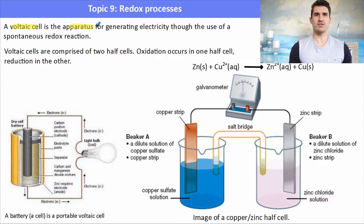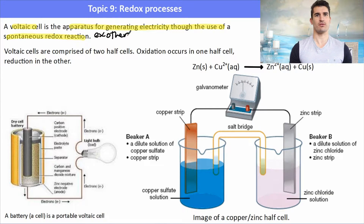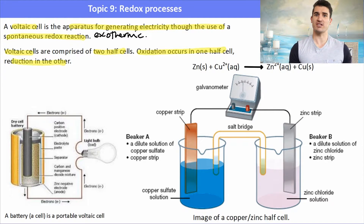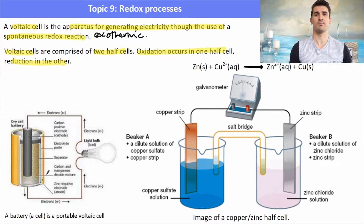A voltaic cell is an apparatus for generating electricity through a spontaneous redox reaction. It's also an exothermic reaction, so as soon as we join the two half cells together it releases energy and generates a current. A voltaic cell is comprised of two half cells — an oxidation half reaction takes place in one half cell and a reduction half reaction in the other.